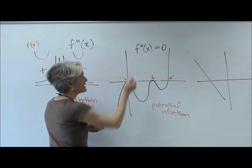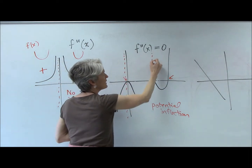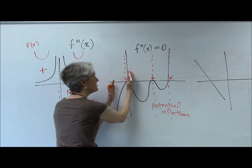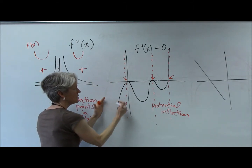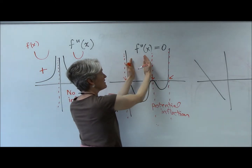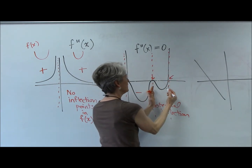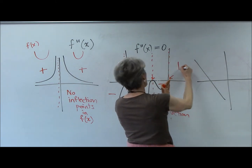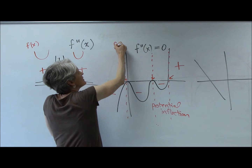Setting up the regions with dash lines. In this region, my second derivative has a y-value that's negative. In this region, negative again. In this region, negative. Oh my gosh, all this negativity. In this region — positive! So let's draw a little picture of F of X's concavity.